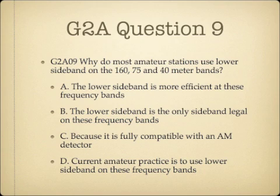Question 9. Why do most amateur stations use lower sideband on the 160, 75, and 40 meter bands? A. The lower sideband is more efficient at these frequency bands. B. The lower sideband is the only sideband legal on these frequency bands. C. Because it is fully compatible with an AM detector. Or D. Current amateur practice is to use lower sideband on these frequency bands.